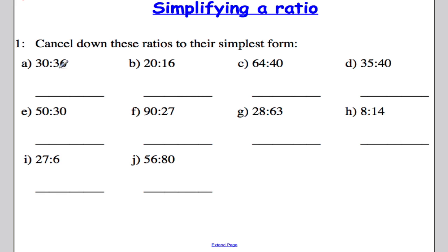We have 30 to 36 and I need to cancel this down so that it's in its simplest form. So I have to ask myself a question. What is the biggest number that I can divide into 30 and 36? And with a little bit of thought, we should figure out that 6 will divide into 30 and 6 will divide into 36.